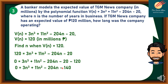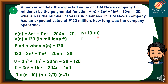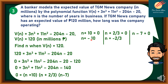We can factor this using synthetic division. The factors are 0 = (n + 10)(n + 2/3)(n − 7). Applying the zero property: if n + 10 = 0, then n = −10. If n + 2/3 = 0, subtracting both sides by 2/3, then n = −2/3. If n − 7 = 0, adding both sides by 7, then n = 7.